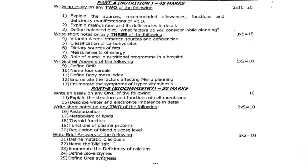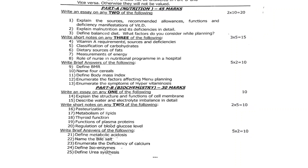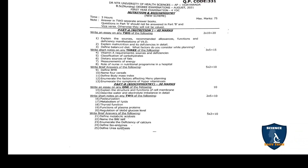Out of those four short note questions, answer any two — 2 × 5 = 10 marks. Brief answers: 21st: define metabolic acidosis. 22nd: name the bile salts. 23rd: enumerate the deficiency of calcium. 24th: define isoenzyme. 25th: define urea synthesis. Each question carries two marks — 5 × 2 = 10 marks. That completes the August 2021 question paper.